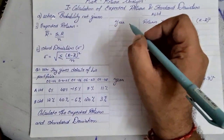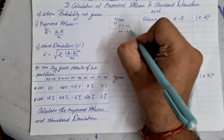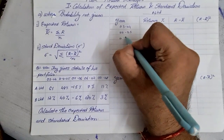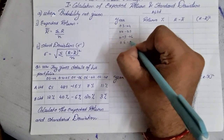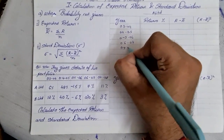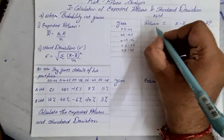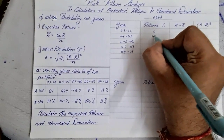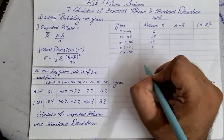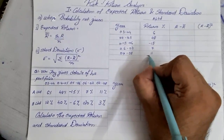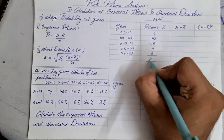The columns will be: years — 2003–2004, 2004–2005, 2005–2006, 2006–2007, and 2007–2008. Under return, we note down the given returns: 6%, 48%, negative 15%, 7%, and 11%. The total of that, when you add up and subtract the negative 15, you get a total of 57.